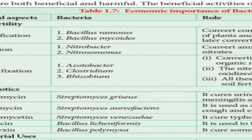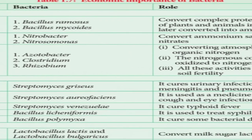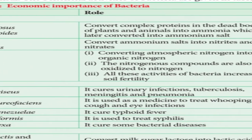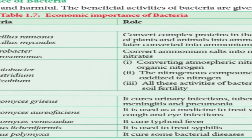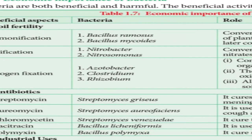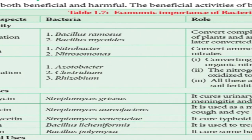Nitrification means ammonia is converted to nitrite and nitrate. This is carried out by Nitrobacter and Nitrosomonas, which convert ammonium salts into nitrates and nitrites. That is the role of these two bacteria. Nitrogen fixation is carried out by Acetobacter, Clostridium, and Rhizobium. These are the three bacteria which are helpful in nitrogen fixation.